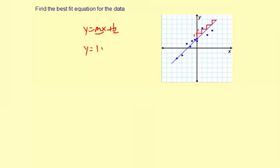So y equals one x and then plus b is the initial amount or the y-intercept. That's right here. It's two.